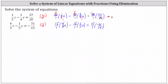Now we'll multiply, which will give us an equivalent equation without fractions. For the first product, we have 4 times 1x, or 4x. Minus, for the second product, we have 5 times 3y, or 15y. On the right, 1 times 37 is 37.